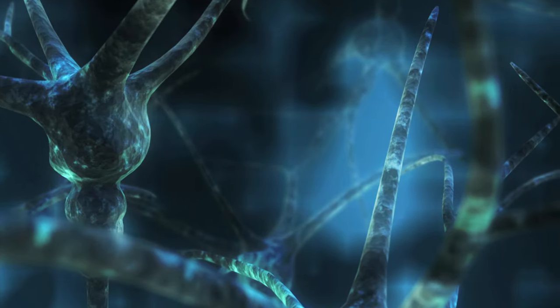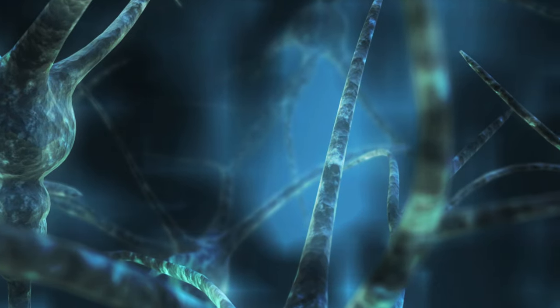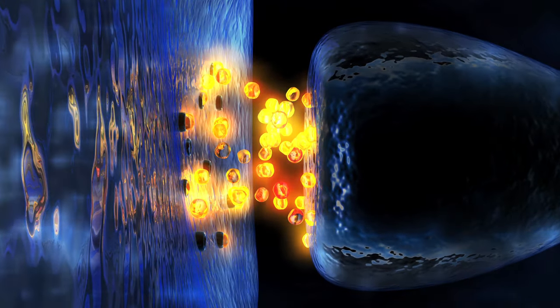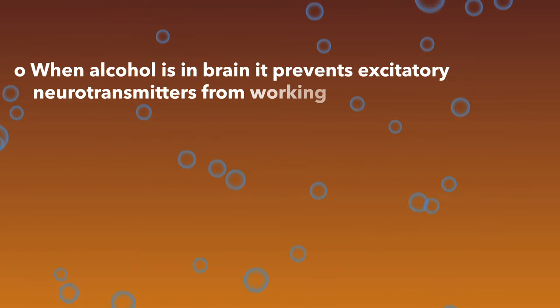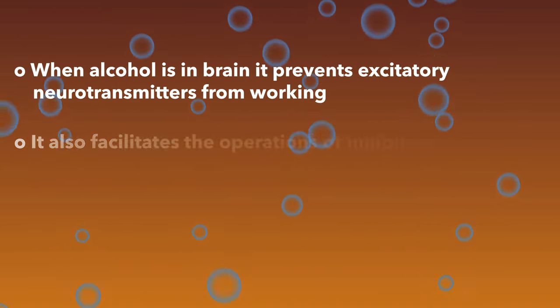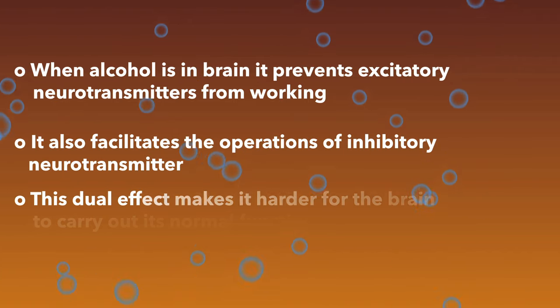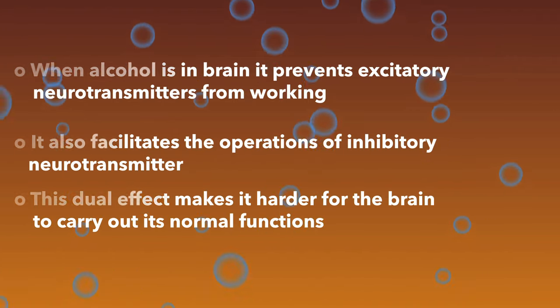Molecules called neurotransmitters influence this process by either increasing or decreasing the likelihood that a message will be sent out from a brain cell. When alcohol is in the brain, it acts by both preventing excitatory neurotransmitters from working and by facilitating the operations of inhibitory neurotransmitters. This dual effect makes it very difficult for the brain to carry out its normal functions.